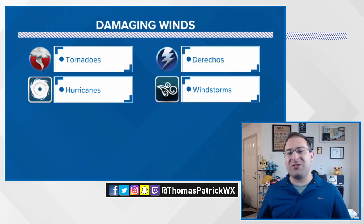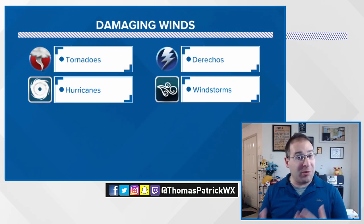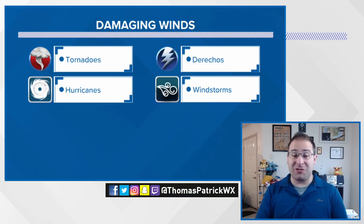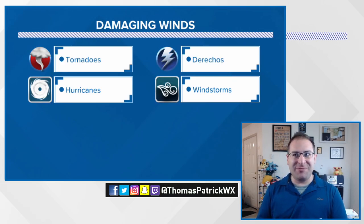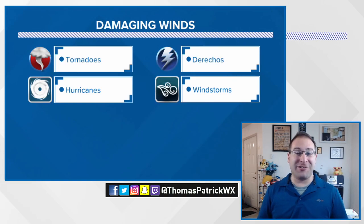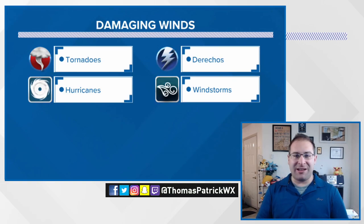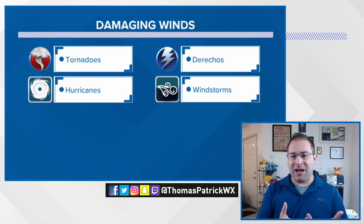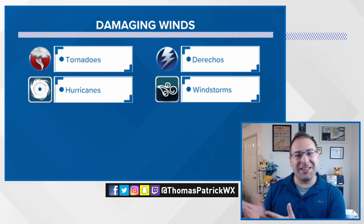A derecho is a severe thunderstorm complex that produces widespread wind across several states over a long period of time — another extreme wind event affecting far more people than an individual severe thunderstorm. Severe thunderstorms themselves can produce wind gusts of 60, 70, even 80 miles per hour on occasion. Then we have windstorms, which are really the 'none of the above' category — not a tornado, not a derecho, not a severe thunderstorm, not a hurricane, but systems that produce violent winds. That lack of categorization essentially creates windstorms, which are also comparable to gales for the sailing enthusiasts out there.